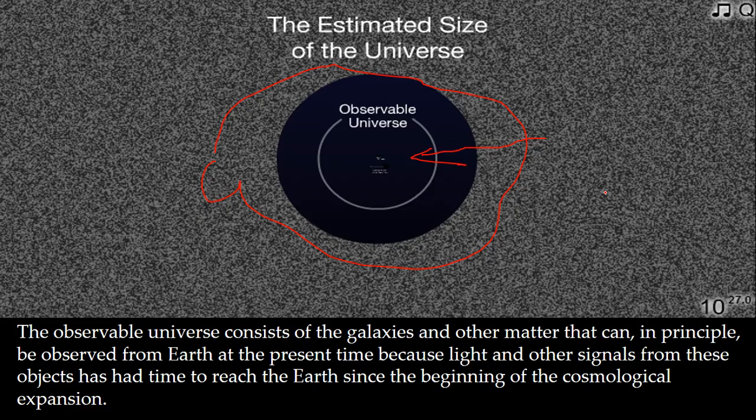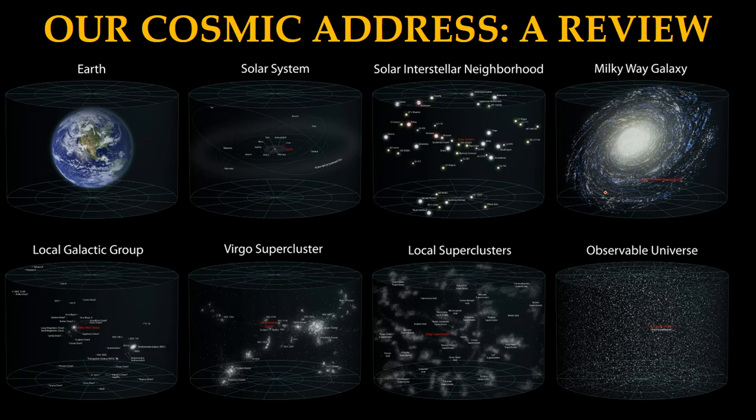So what you basically have is our cosmic address: we are here on Earth, the Earth is part of the solar system, the solar system is part of the solar interstellar neighborhood, the Milky Way galaxy, the local galactic group, the Virgo supercluster, the local superclusters, and last but not least, the observable universe. That is our cosmic address. This concludes this lecture — in the next lecture we're going to move on with basic observations of the night sky.